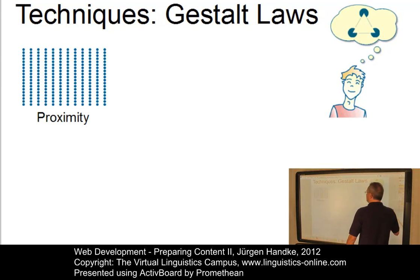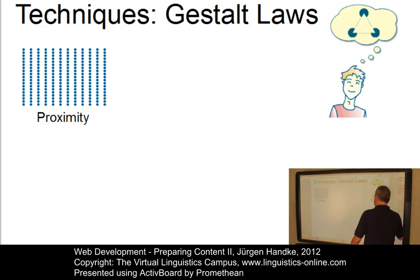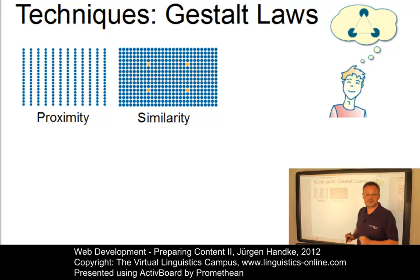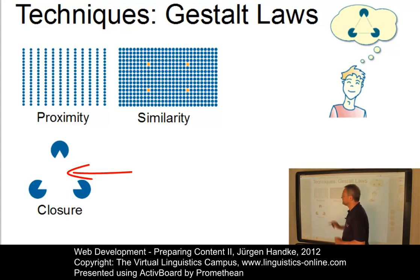For example, the principle of proximity: elements which are closer together — that is, here the vertical line — are perceived as belonging together. In our example, the points are perceived as vertical rather than horizontal lines. Or look at the principle of similarity: elements which look alike are perceived as belonging together. In our example, the orange points are perceived as a rectangle. Or take the principle of closure: humans tend to perceive closed forms even if there are none. Applied to this example here, we tend to see a white triangle in the middle, adding lines in our mind to make it a whole.